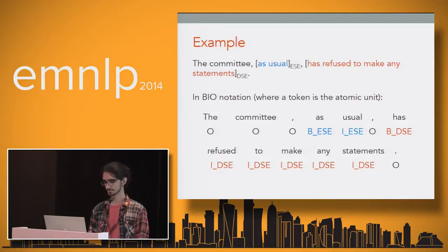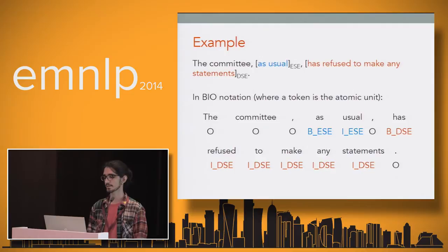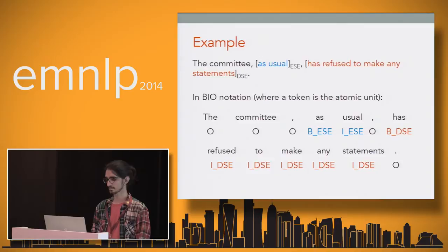To make things clear, consider the example sentence: 'The committee, as usual, has refused to make any statements.' The phrase 'has refused to make any statements' is a DSE because it directly conveys an attitude. And 'as usual' is an ESE because it implicitly conveys a sentiment from the author of the sentence toward the committee.